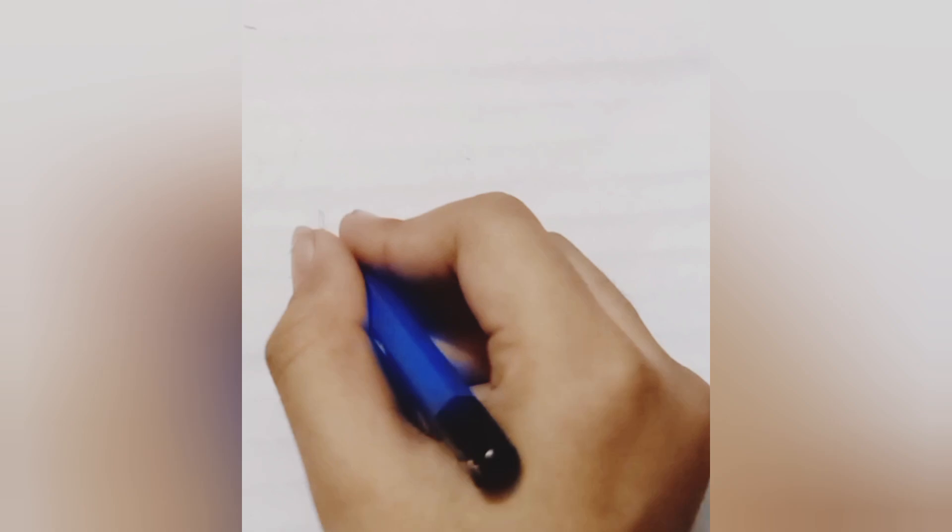Start by drawing the square on your paper. This will be the front face of your cube.